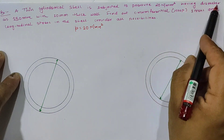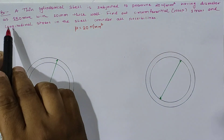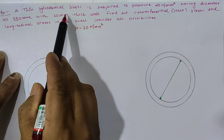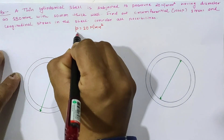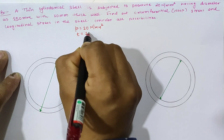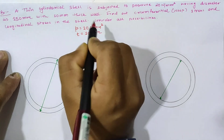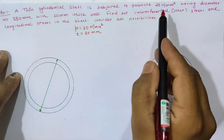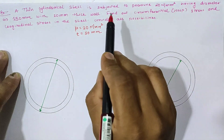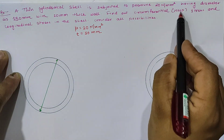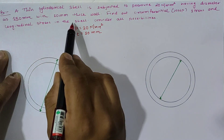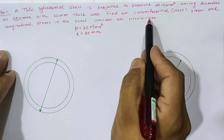The next data gives a diameter of 150 mm with a 10 mm thick wall, meaning the wall thickness is 10 mm. We have to calculate the circumferential as well as longitudinal stress in the vessel — consider all possibilities.